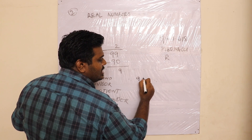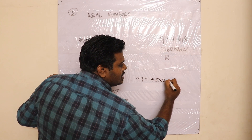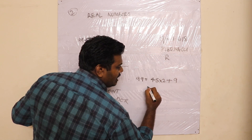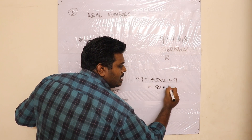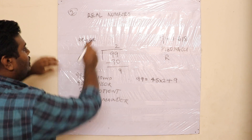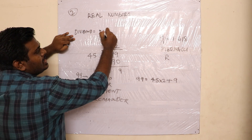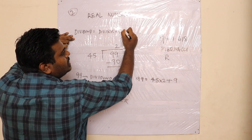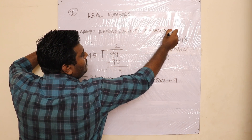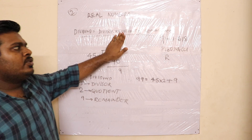So we can write: 99 = 45 × 2 + 9. That is, 45 into 2 equals 90, plus 9 equals 99. Dividend = Divisor × Quotient + Remainder.